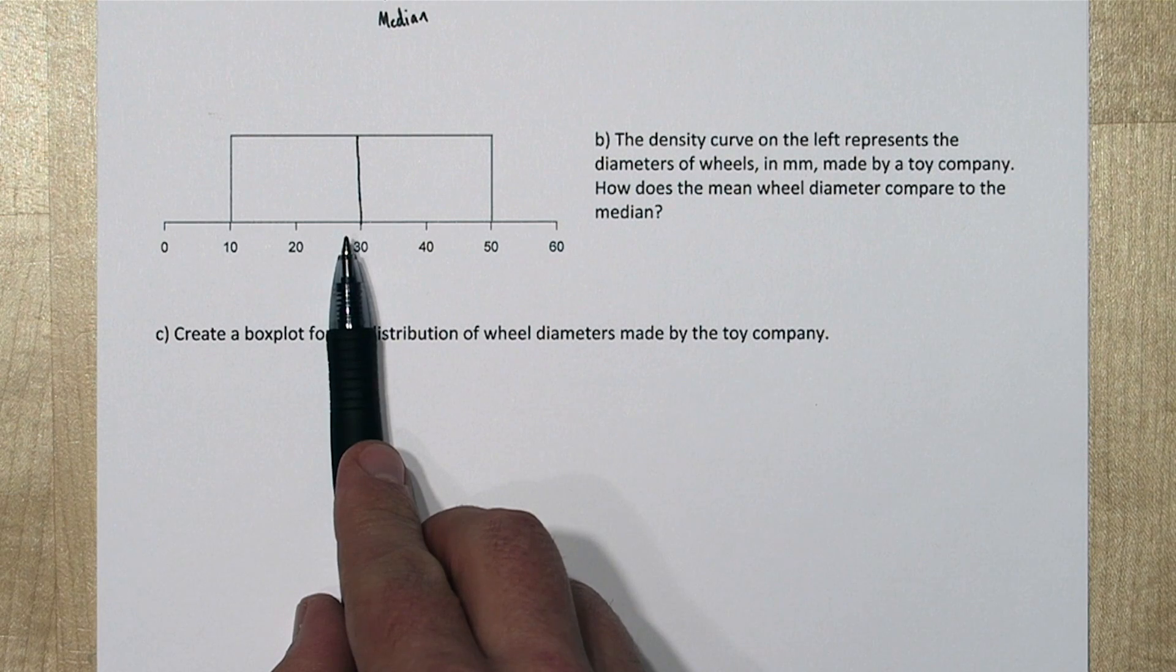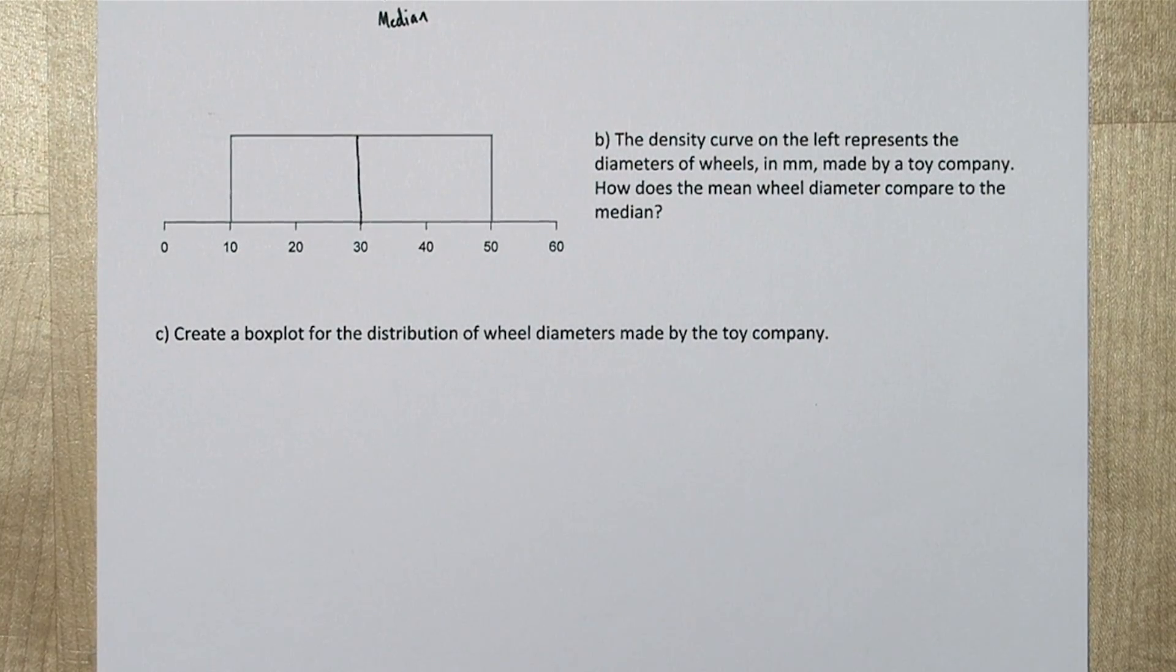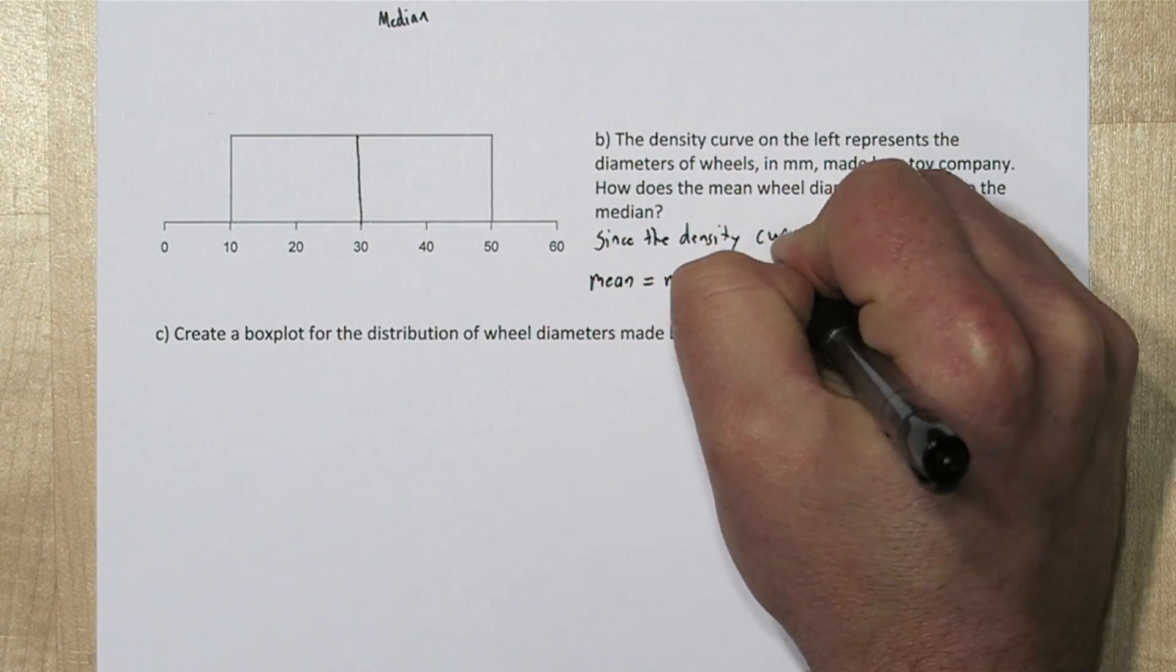Because this is the point that it would balance and it's also the equal area point. There's equal area to the left and the right of this line. So we'll say the mean equals the median, which equals 30 millimeters.